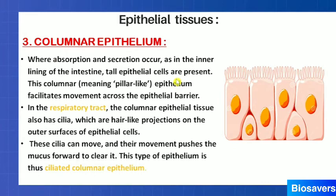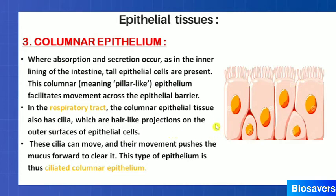The third type of epithelial tissue is columnar epithelium. As the name suggests, these are column-like, long pillar-shaped cells. They are present in organs where absorption and secretion occur, for example in the intestine. Sometimes this columnar epithelium bears cilia — for example, in the respiratory tract. The cilia help move materials along the tract. That is why this epithelium is also called ciliated columnar epithelium.